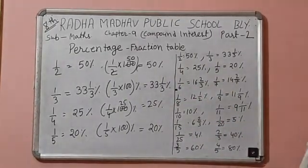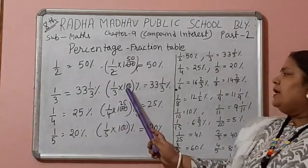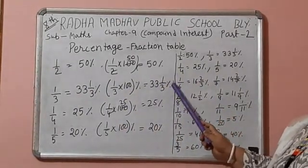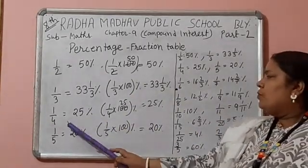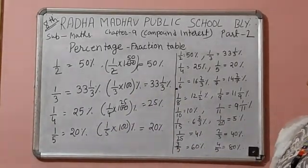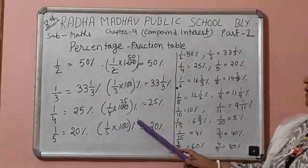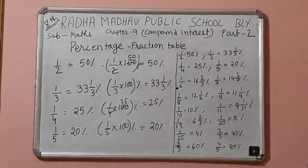Same thing happened with 1 by 3, multiply by 100, answer is 33 over 1 by 3%. 1 by 4, that means 25%. 1 by 5, multiply by 100 is equal to 20%.